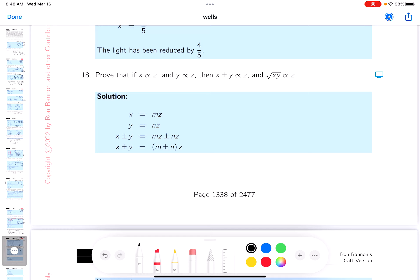So they tell me x is proportional to z, so I'll write down x is some multiple of z, and they tell me y is proportional to z. I'm going to say nz. From this, they want me to show that x plus or minus y is going to be proportional to z.